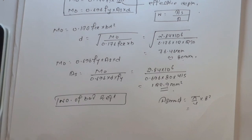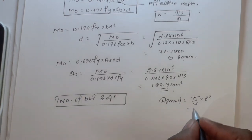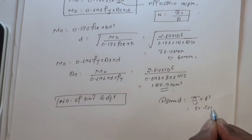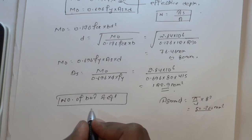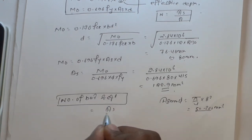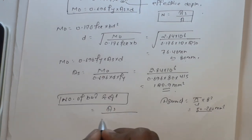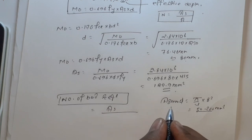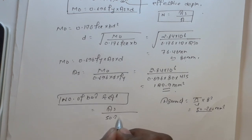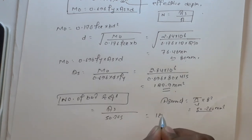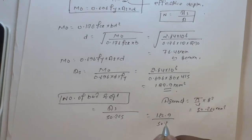The area of steel required is 122.9 mm². Using 8 mm diameter bars, area of one bar equals pi by 4 into 8² equals 50.265 mm². Number of bars equals total area of steel divided by area of one bar: 122.9 divided by 50.265, which gives approximately 2 to 3 bars.